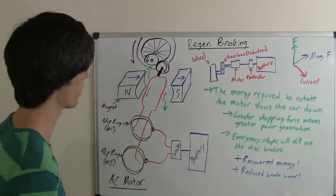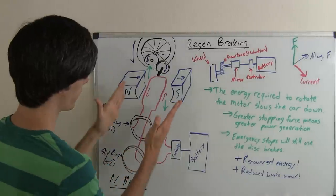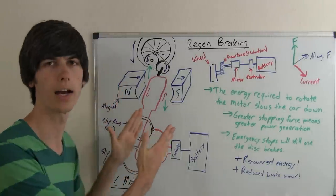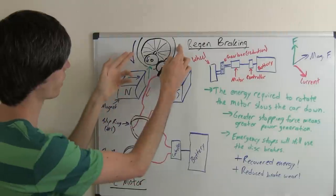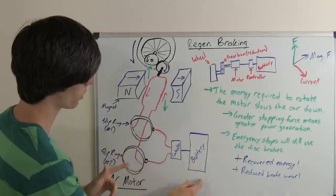What we're looking at here, just like in that video on AC power generation, this is our very simplified AC motor. Here we've got our wheel, here's our gear reduction. This is our motor, there's our controller, and there's our battery.